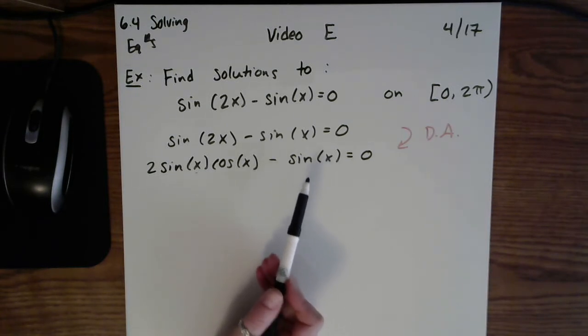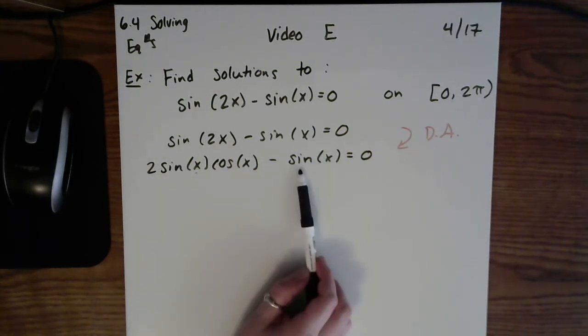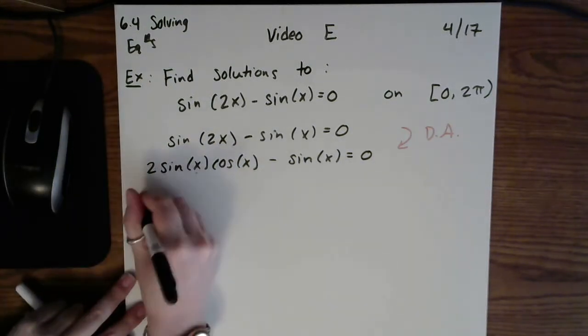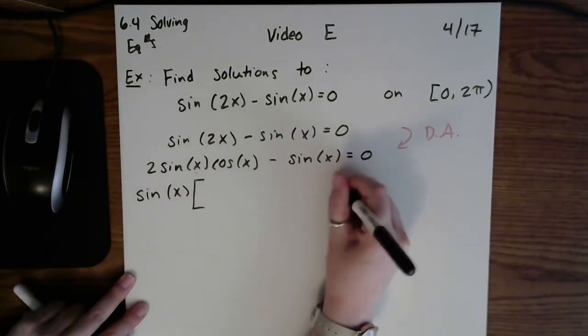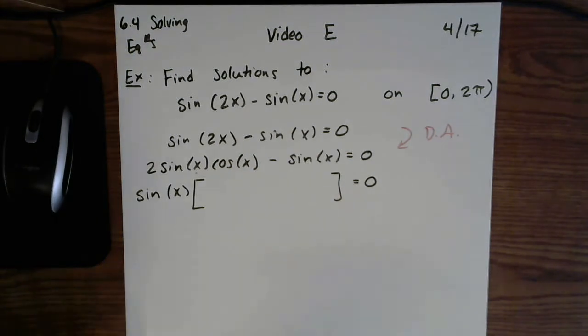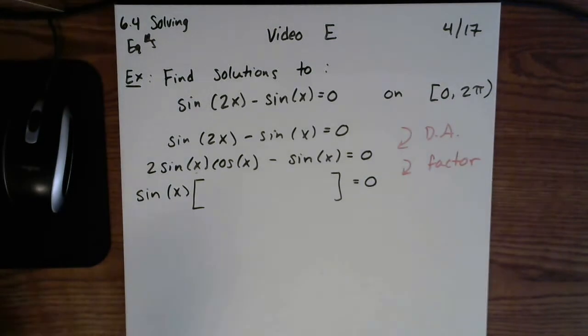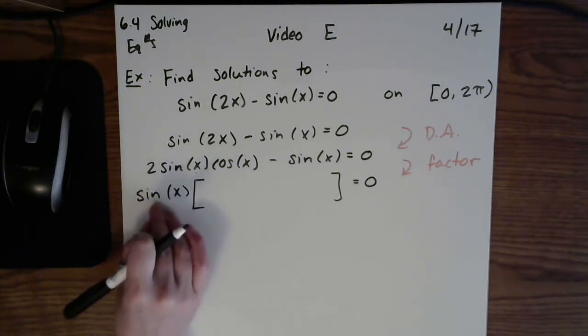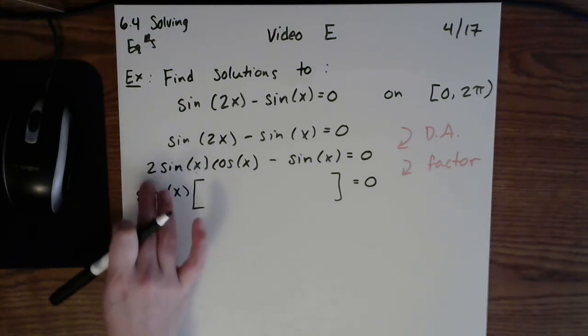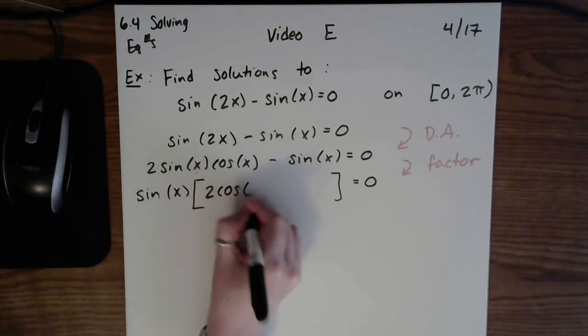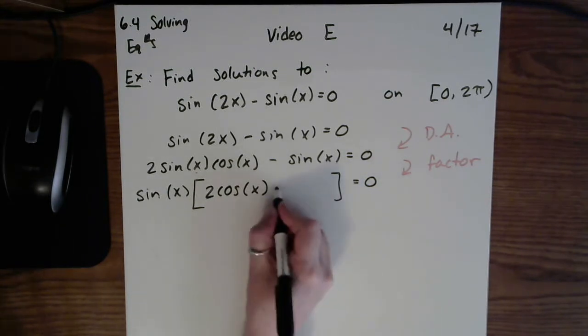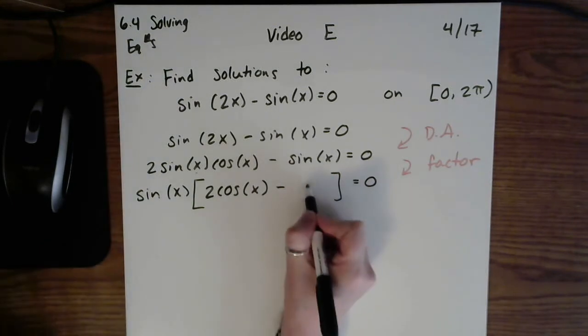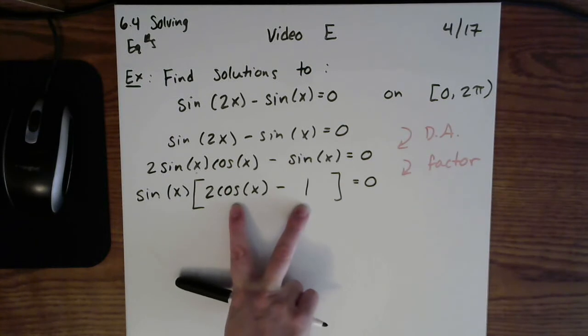Now when trying to solve equations, if you have terms that share things, then often we would like to factor those out. So I am going to factor the sin(x) out of each term. If I pull a sin(x) out, this is where students have a little bit of trouble. Think of this as division. Look at this first term and if you were to divide that first term by sin(x), the sines would cancel and all you'd have left is 2cos(x). Now don't forget about this other term. You have a subtraction symbol and then if you divide sin(x) by sin(x), you're left with 1.